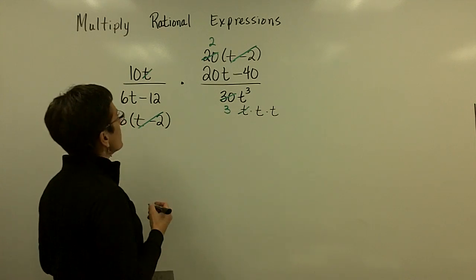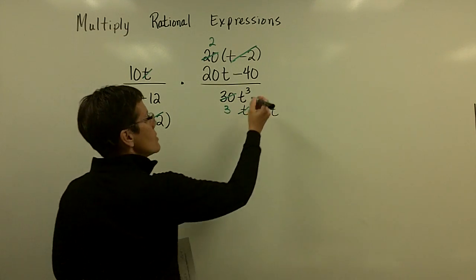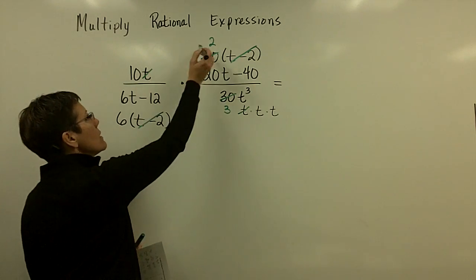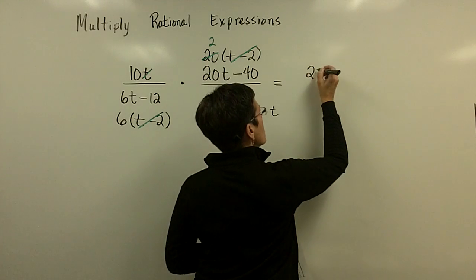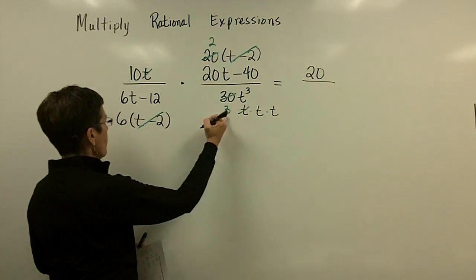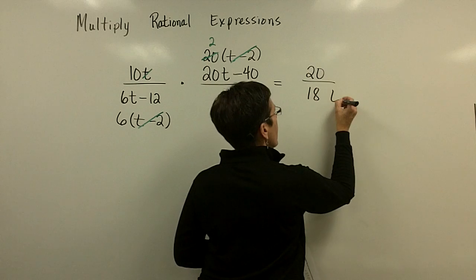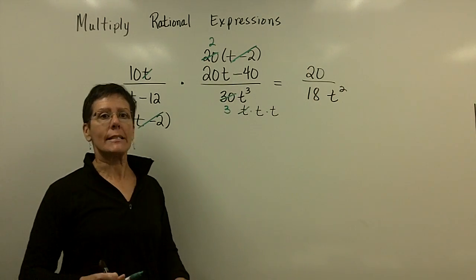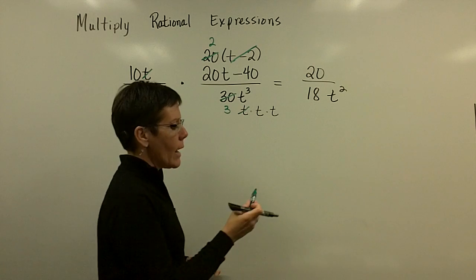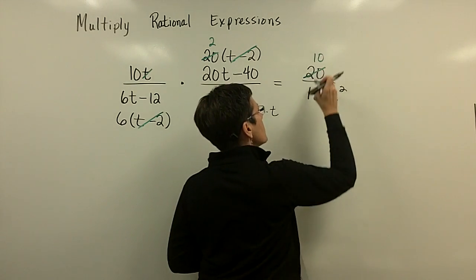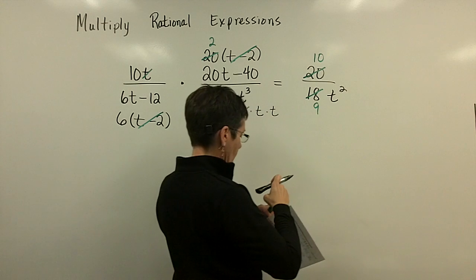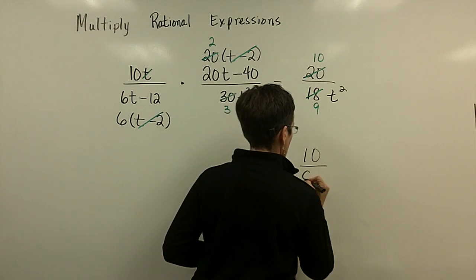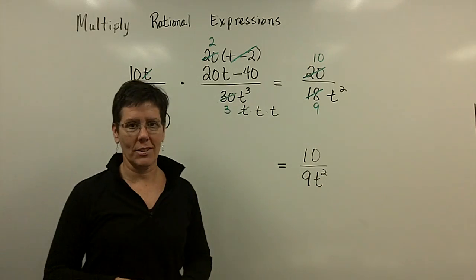Continuing — I still have a 10 times 2, which is 20, and a 3 times 6, which is 18, and then t squared. I forgot to take the factor of 2 out of those, so 2 goes into here 10 times and into there 9 times. Finally, I've reduced this expression to 10 over 9t squared. Again, you're just reducing a fraction.